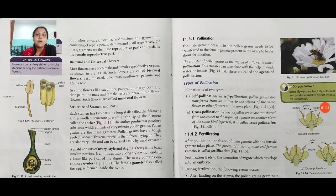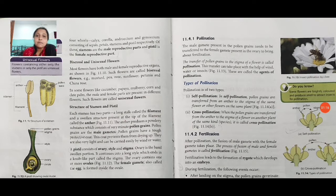In some flowers like cucumber, papaya, and mulberry, different parts are present in different flowers. Such flowers are called unisexual flowers.